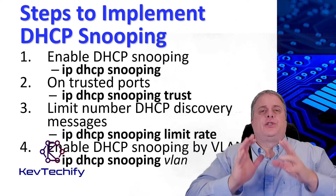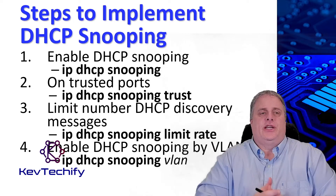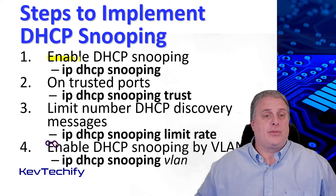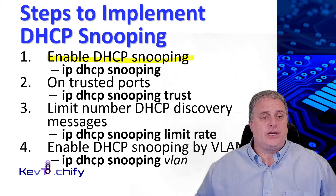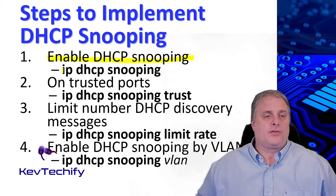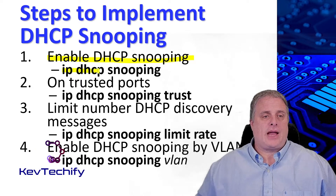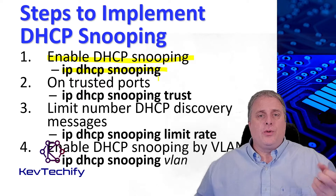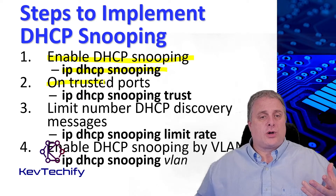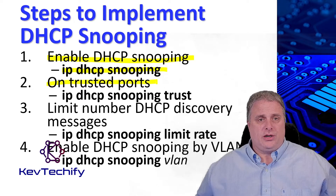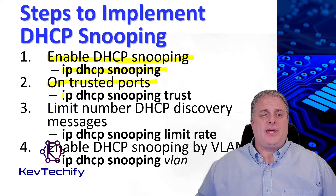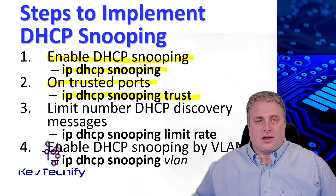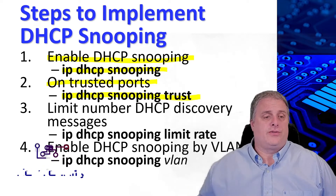There are four steps to enable DHCP snooping. The first step is to enable the service globally using the global configuration command: IP DHCP snooping. Then go into all trusted ports and use the IP DHCP snooping trust command on each one of those interfaces.